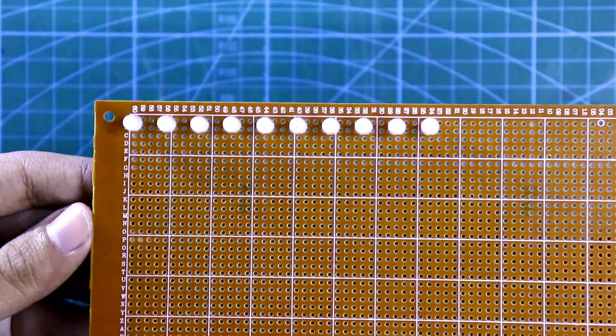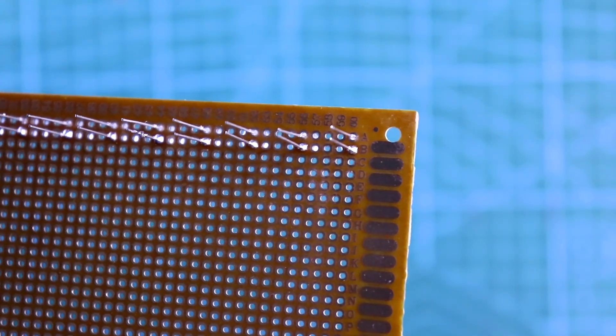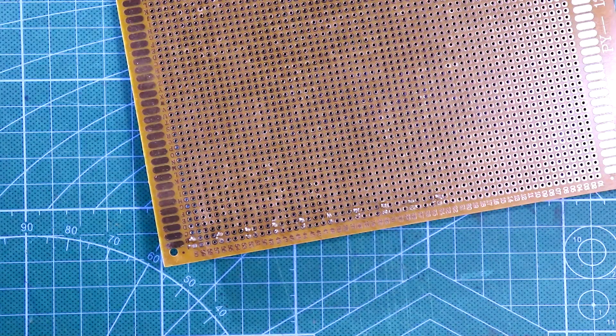So here are 10 LEDs. Now first I'll solder these LEDs. I have soldered only the negative pins. Now I'll connect all the positive pins together.